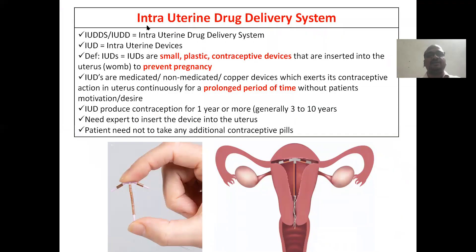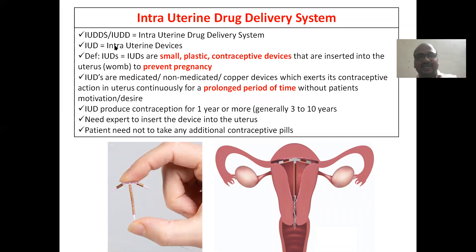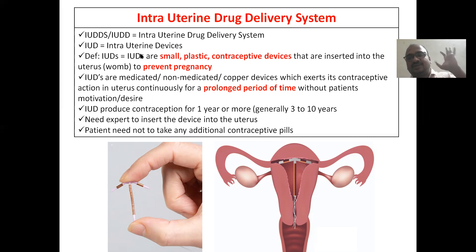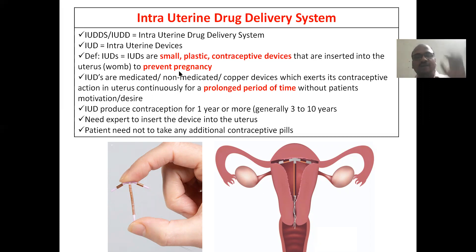Intrauterine — the name itself indicates inside the uterus we are delivering the drug. Intrauterine drug delivery system — IUDD, IUDDS, both are the same. IUD means intrauterine device; D stands for device. IUDs are small, very small plastic contraceptive devices, mainly used for the prevention of pregnancy.